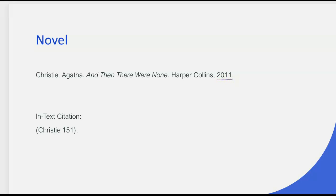When I was talking about dates — pay attention to the date of publication. For Agatha Christie, a majority of you put 1939. While that's not necessarily wrong, that is not the date the copy you're reading was published — that would be a first edition. The novel copy you have: you always want to put the most recent date you see on that publication page. My copy was published in 2011, so that's the date I'm going to put because it's the closest to us.